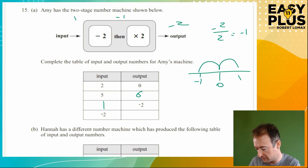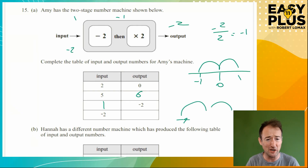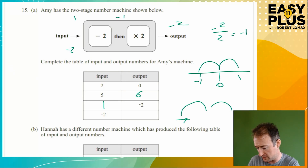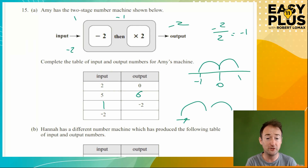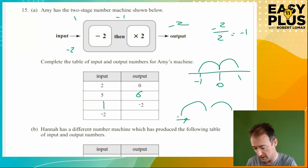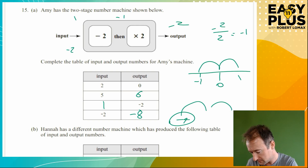Input of minus 2: minus 2 minus 2 — think of the number line, we've gone to minus 2 and then we minus another 2, so that gets us to minus 4. Times 2 makes the thing twice as far in whichever direction you're going, so we're already at minus 4 and going twice as far takes us to minus 8.